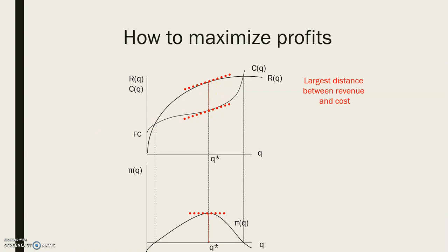If we pay attention to the graph below, we see the profits function. This function goes up and then it goes down. When it goes up it is going to reach a peak, and this peak represents the maximum profits. At this point, we see that the slope is completely horizontal, meaning the slope equals zero. Since the slope of the profits function represents the marginal profits, we know that when profits reach their maximum, the marginal profits will be equal to zero — and this is what we saw mathematically in the previous slide.